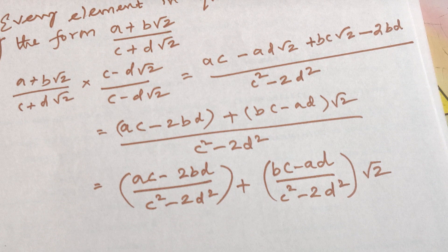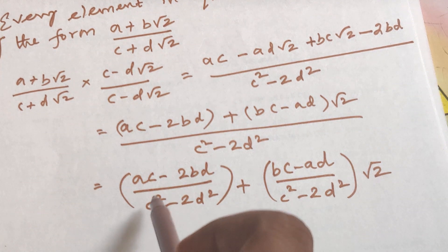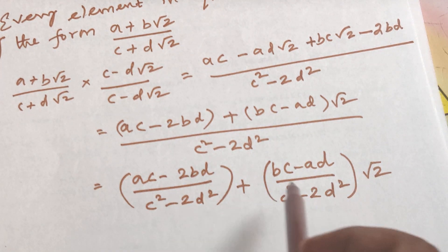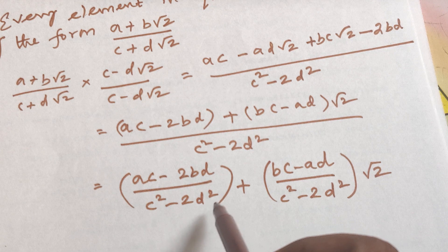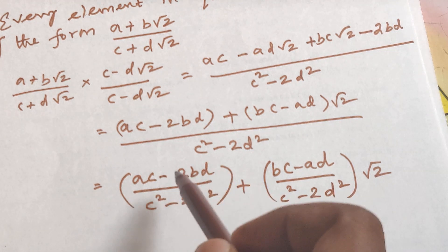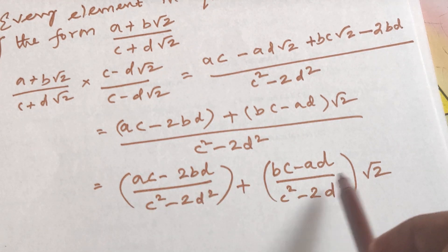Since A, B, C, D are all integers, the quantities AC minus 2BD and BC minus AD are integers, and C squared minus 2D squared is also an integer. So the result is a quotient of integers — meaning the coefficients of 1 and root 2 in the result are rational numbers.